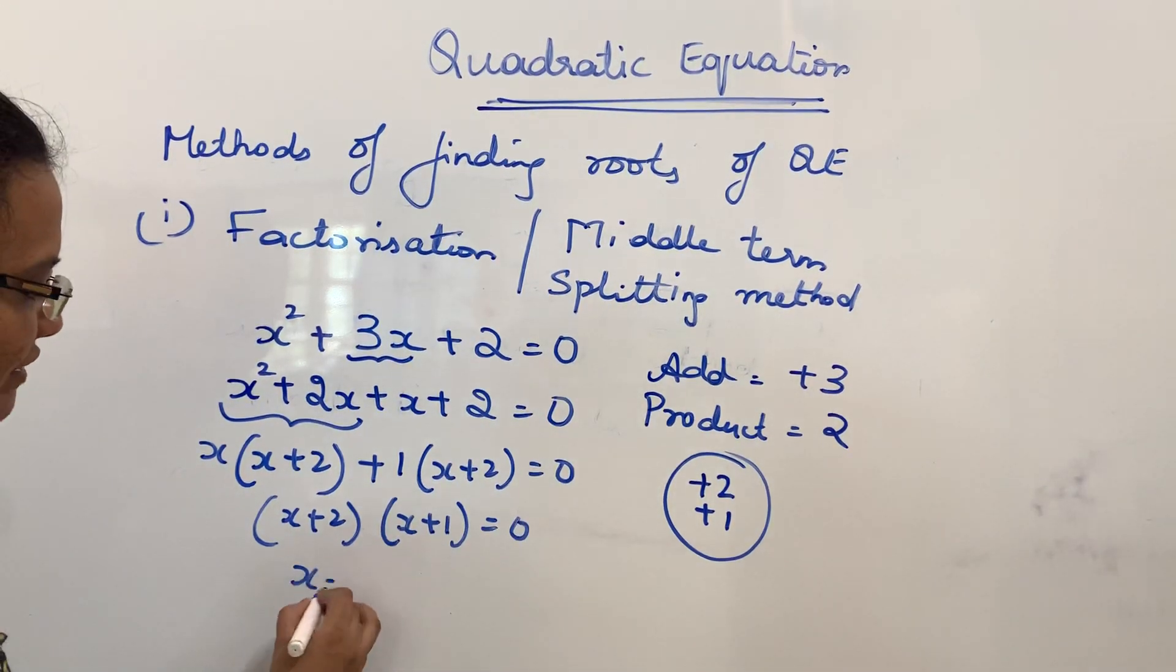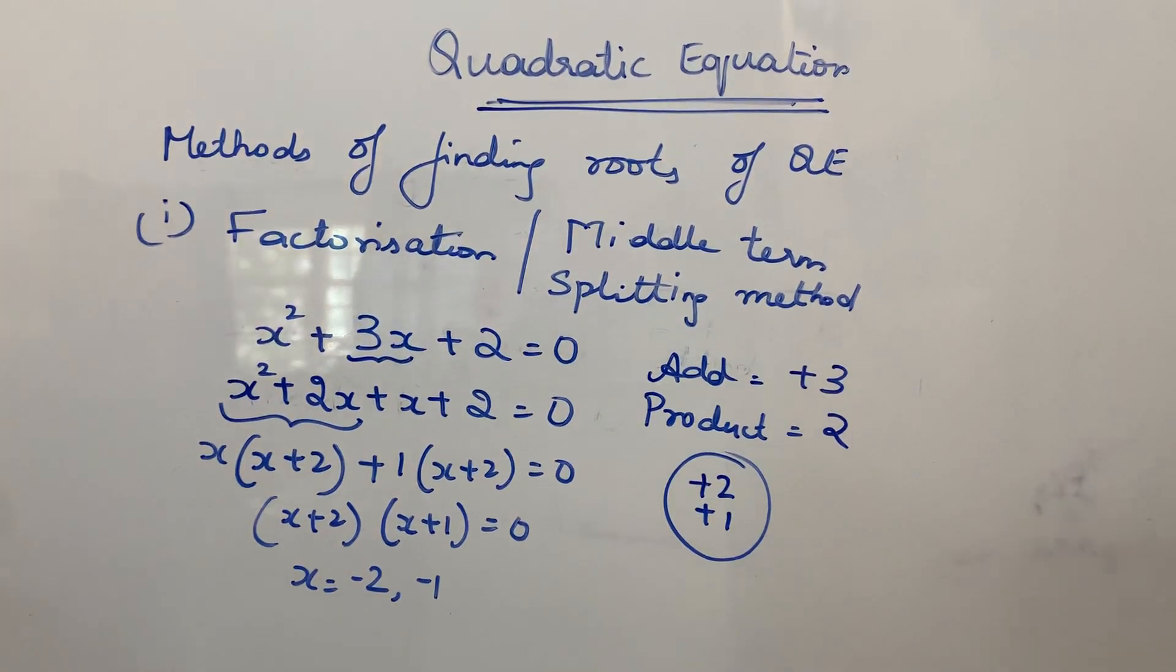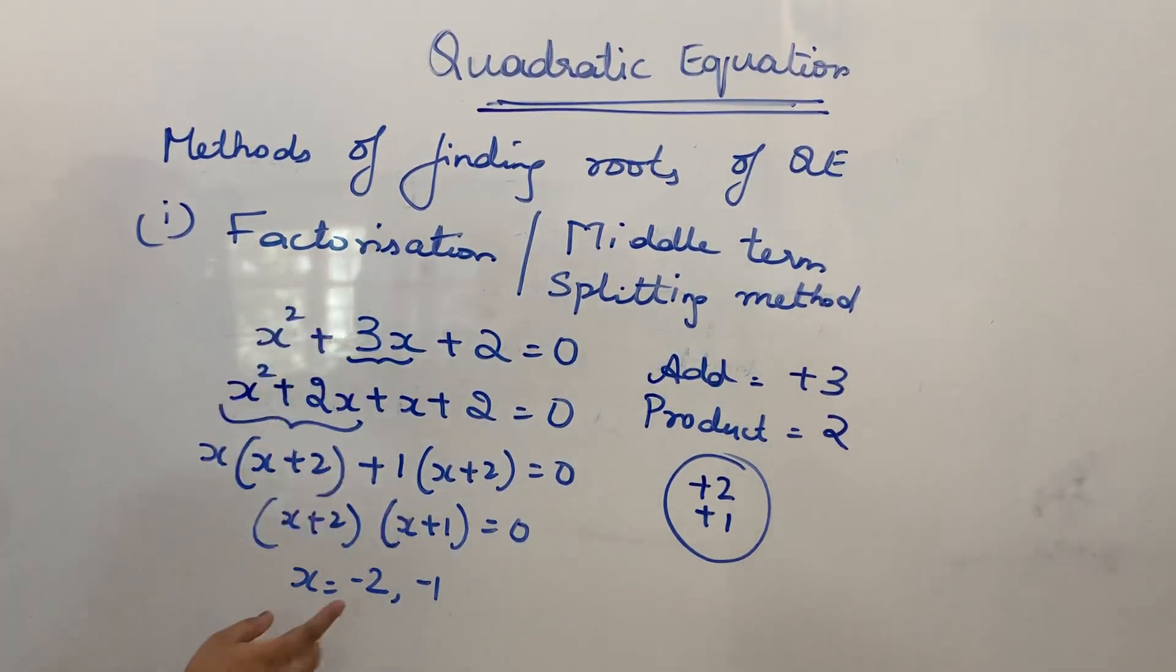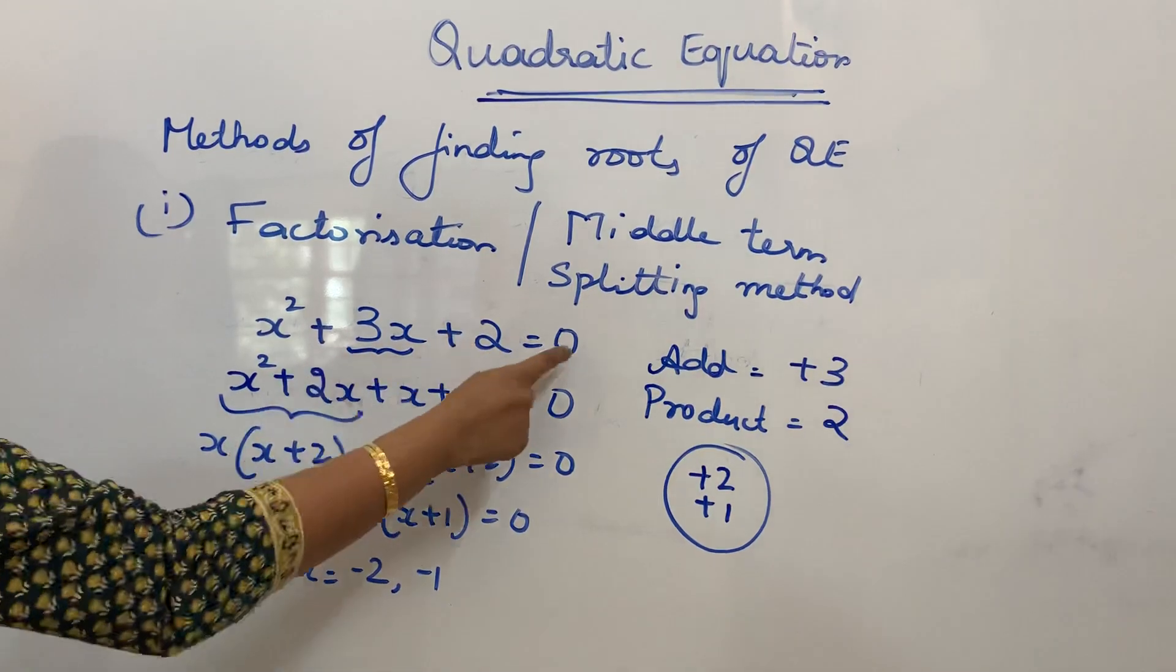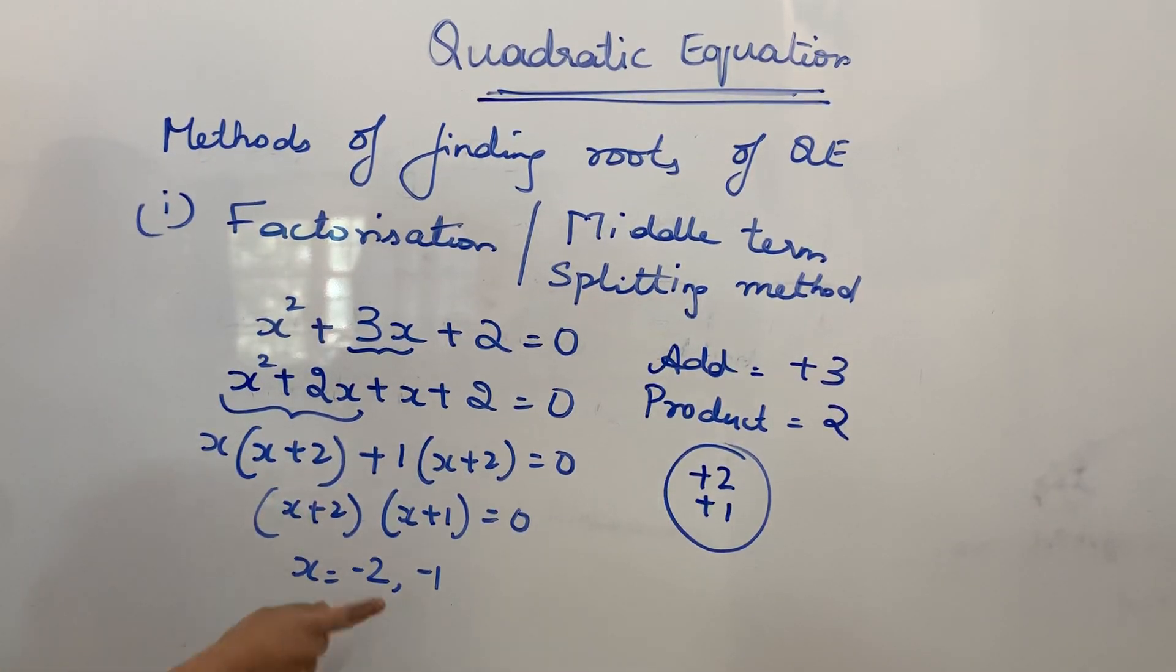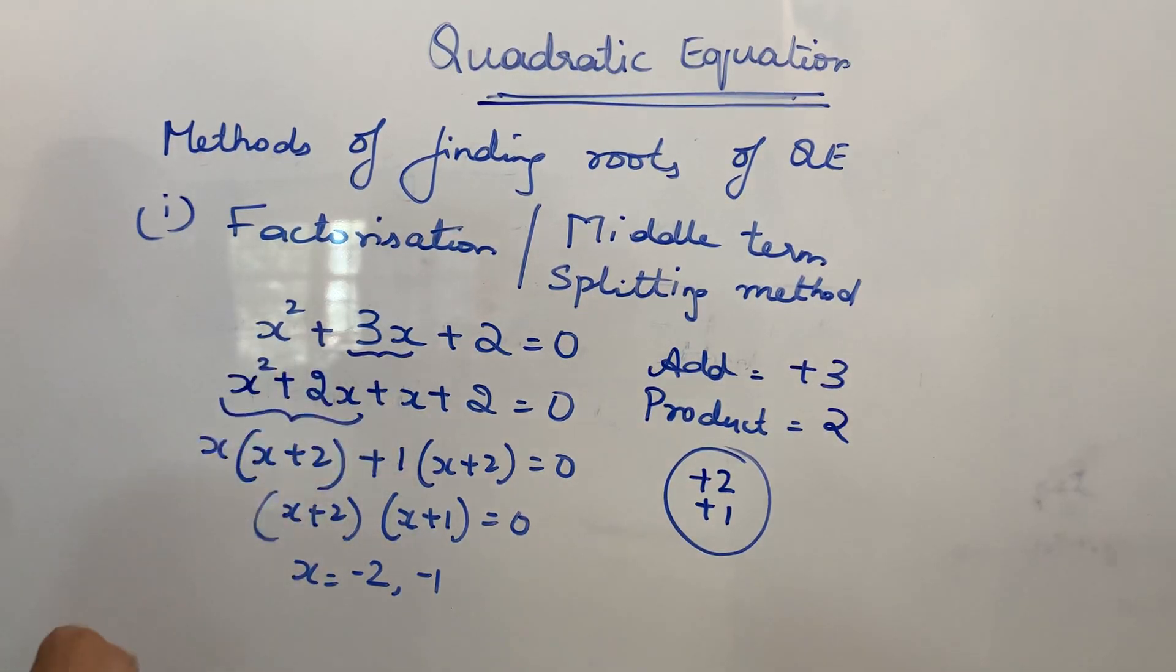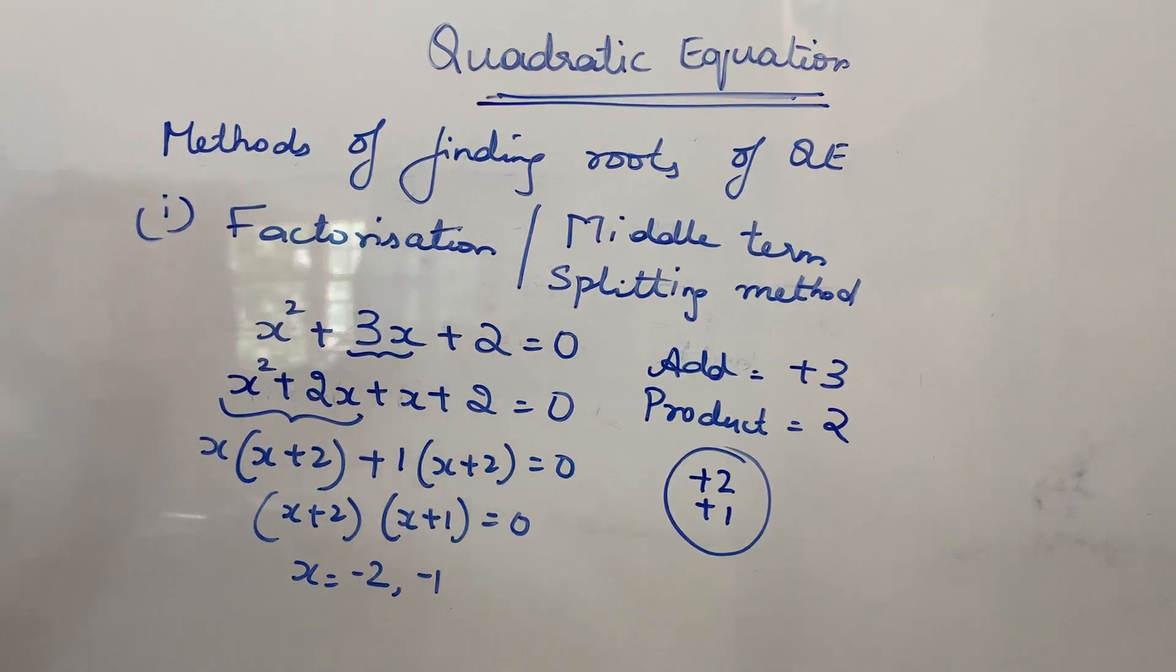So value for X will be -2 or -1. So it is same as finding zeros in polynomial. Now what is the meaning of this, finding roots means: in this equation, if you substitute the value of X as -2, it will be 0. Or in the same equation, if you substitute -1 in the place of X, you will get answer 0. This is the meaning of roots.